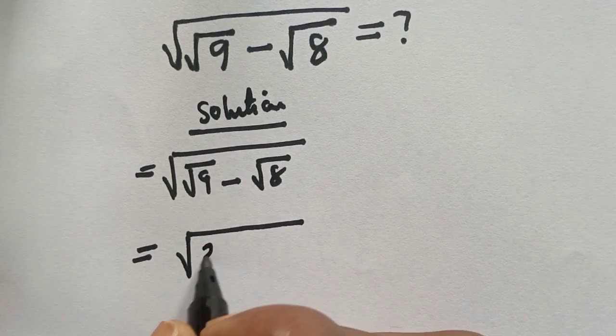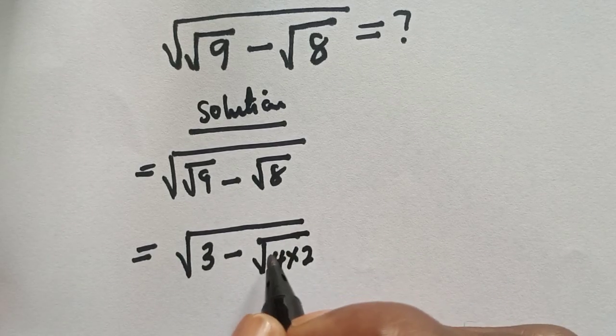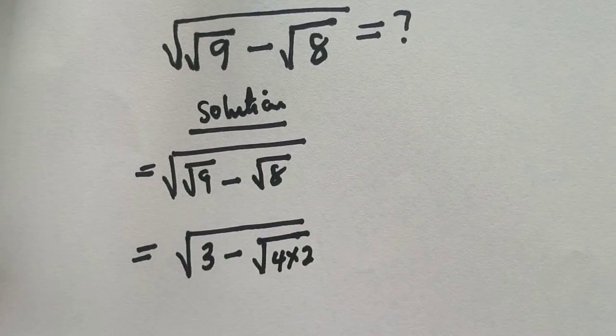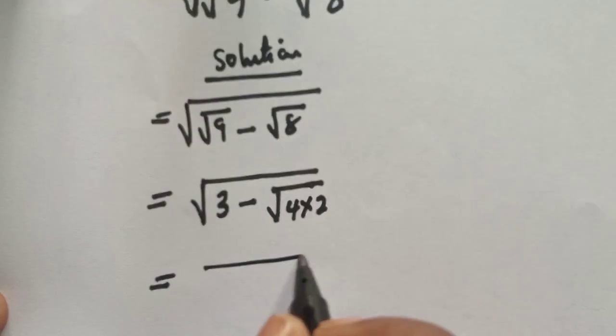Root of 9 is 3 minus root 8 is root 4 times 2. And this is equal to square root of...